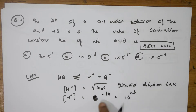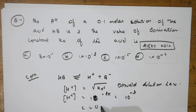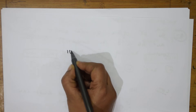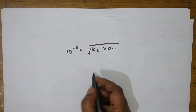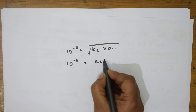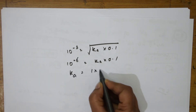pH is the negative logarithm of H⁺ concentration. pH is 3, so H⁺ equals 10⁻³. Concentration c is given as 0.1 molar. Substituting in the formula: 10⁻³ equals root of Ka times 0.1. Squaring both sides: 10⁻⁶ equals Ka times 0.1, so Ka equals 1 × 10⁻⁵.